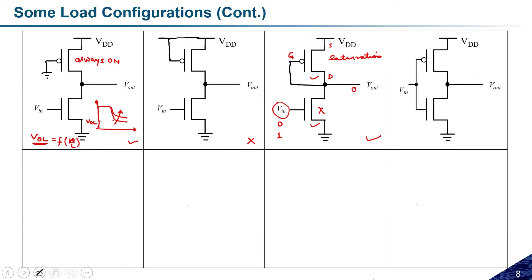The next possible combination is connecting the input and output to the same node — this is the simplest circuit we have already studied. This is nothing but a CMOS inverter, and it will definitely act as an inverter. So these are some of the combinations when we have a pMOS kind of load.